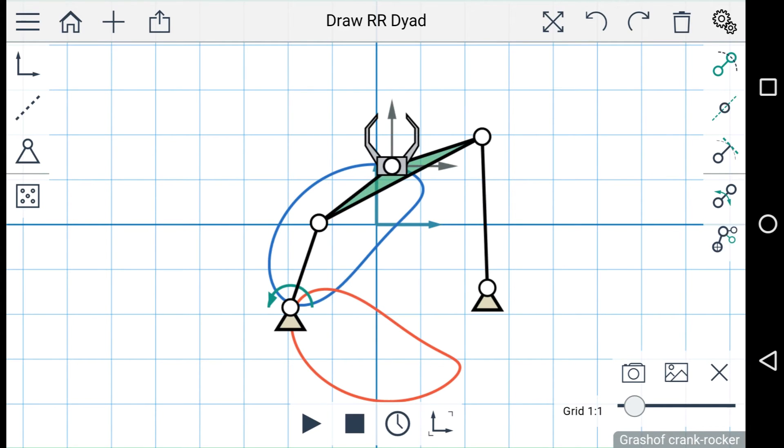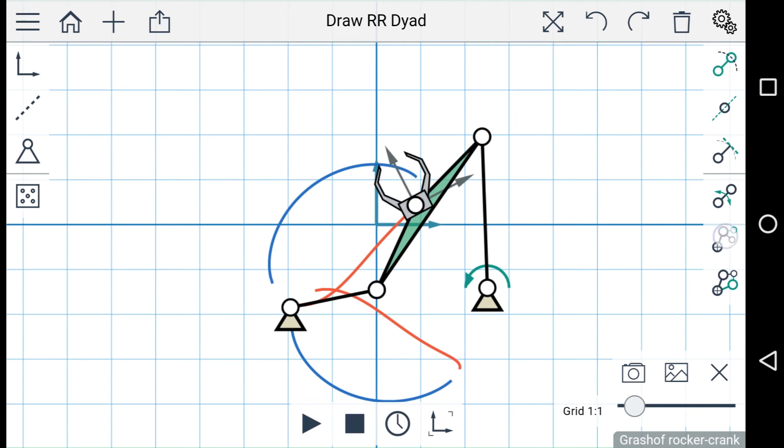You'll notice that when I switch the driving link, a third button appears. And this shows up when there are multiple branches on each circuit. So you can switch between branches and switch between circuits.